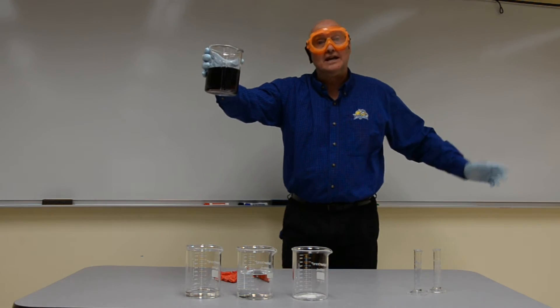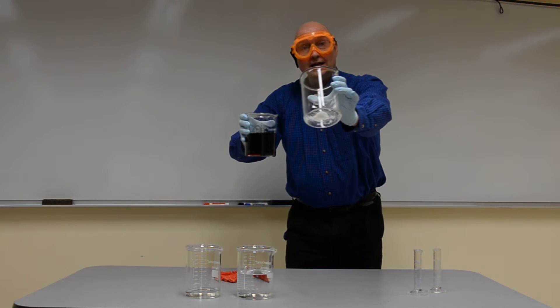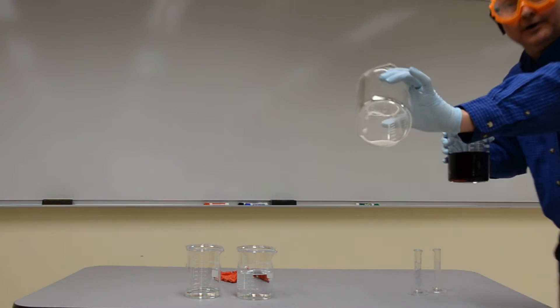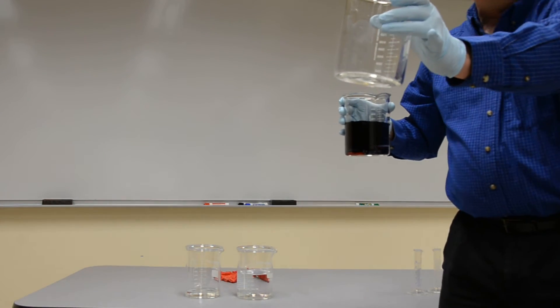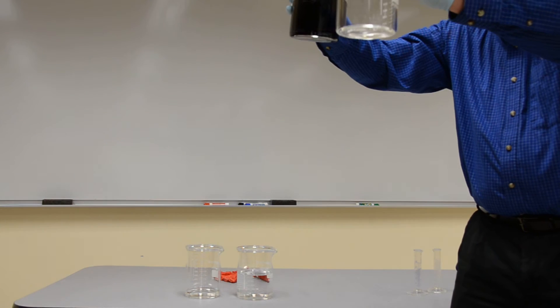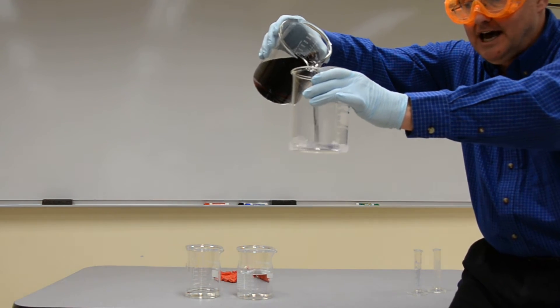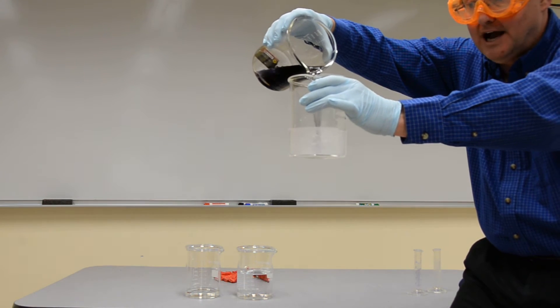Now, an interesting thing is that we can get rid of this blue color by doing the opposite. So inside of this beaker, you'll see a white powder. And that white powder is ascorbic acid, an antioxidant. So if I pour these together, you will see that I can eliminate the blue color because of that process.